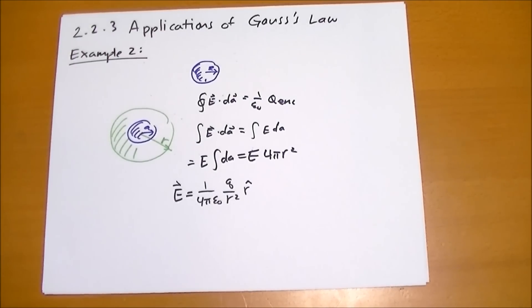So Gauss's law is, he says in the book, always true, but it's not always useful. What does he mean by that?